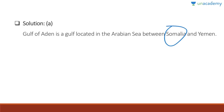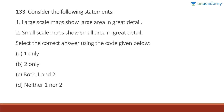Remember the four countries in the Horn of Africa using the mnemonic SEED: Somalia, Eritrea, Ethiopia, and Djibouti. Kenya is not traditionally considered part of the Horn of Africa.